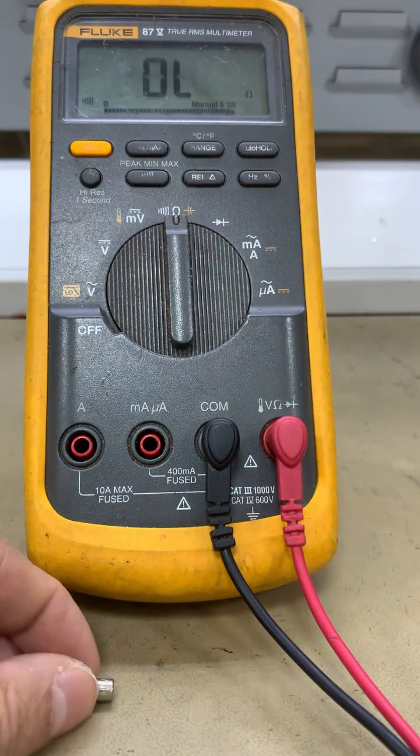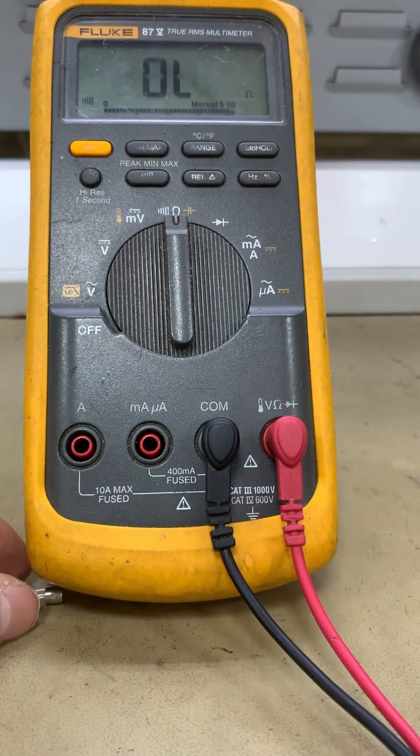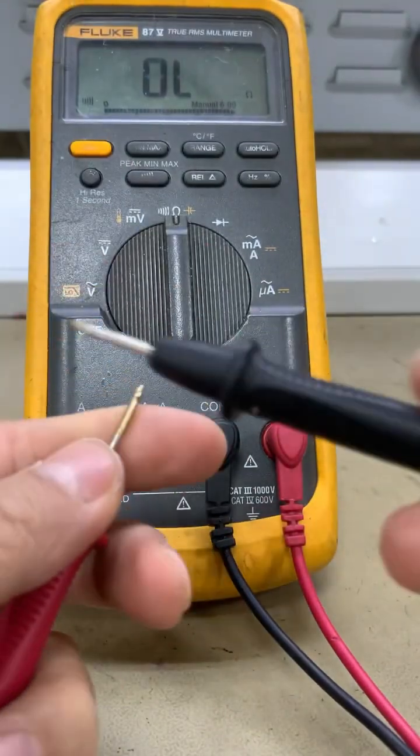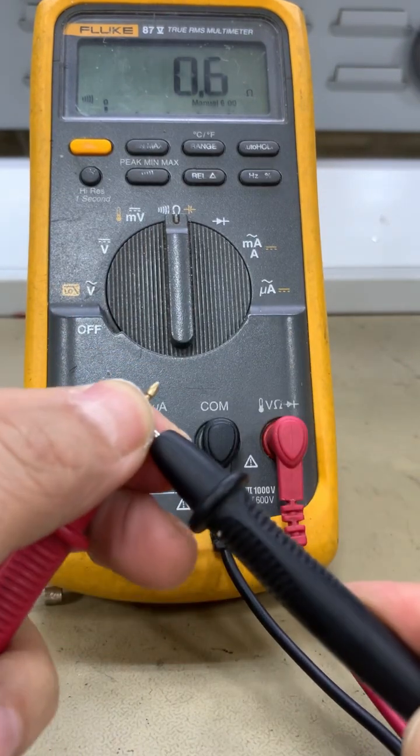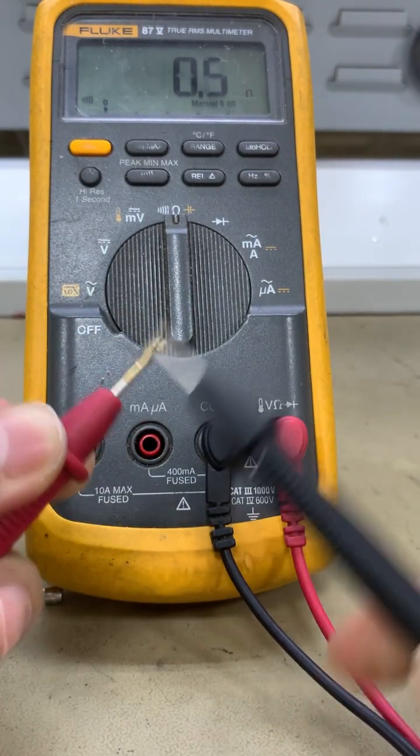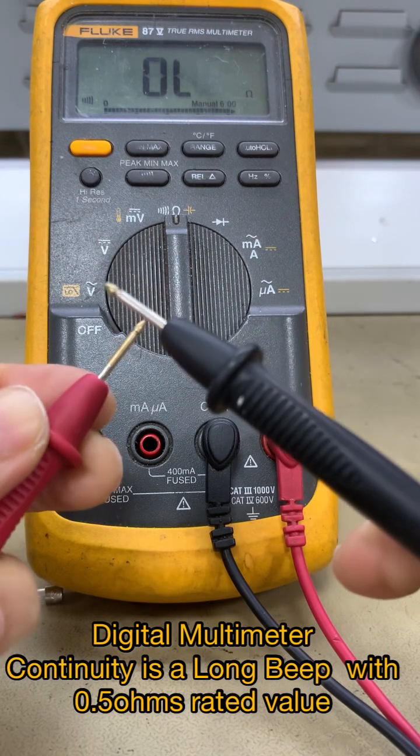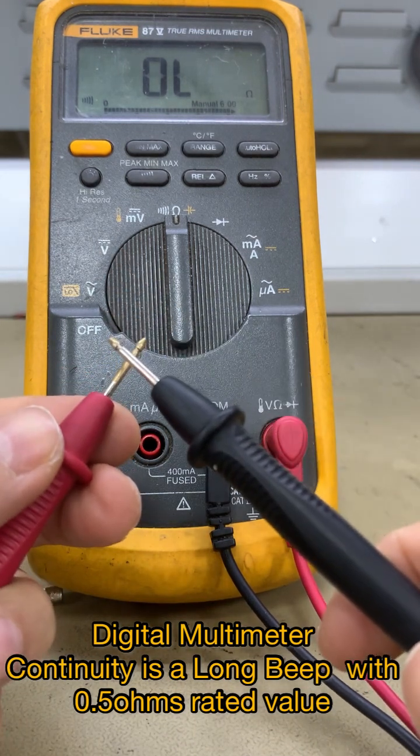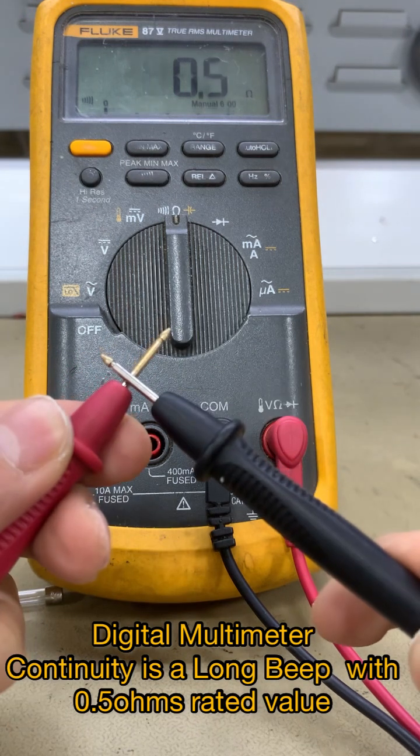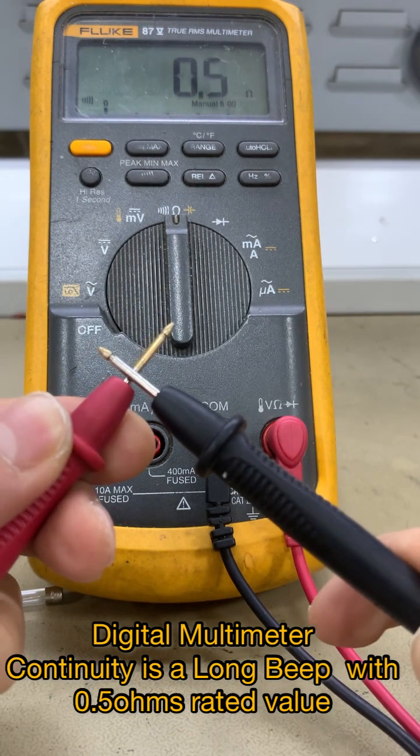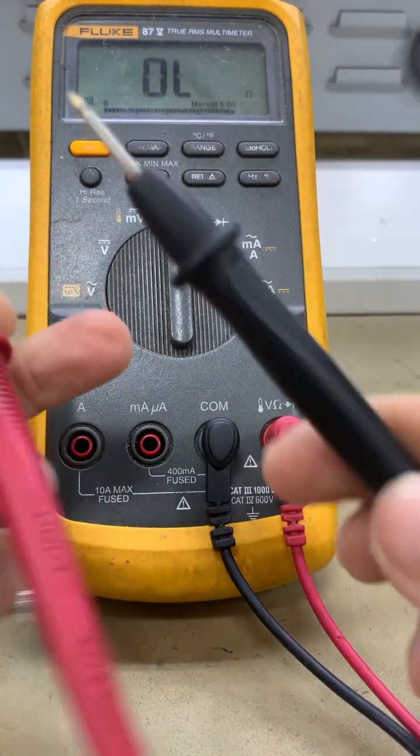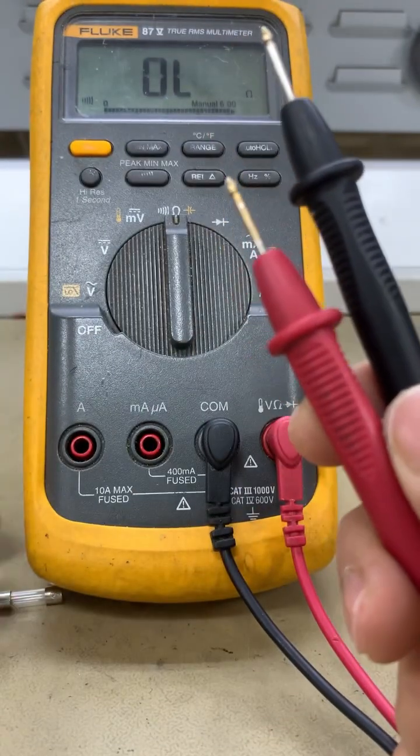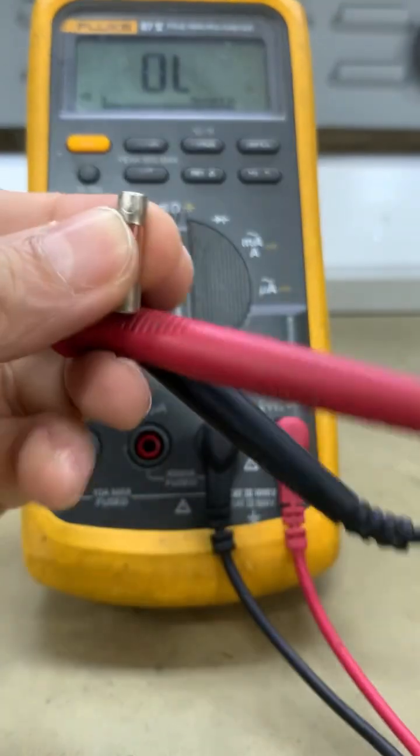Okay, the continuity is a continuous beep. There is a beep. So we touch the red and black probe, this probe. There is a beep, so this is the continuity. There's a long beep. Okay, then let's start, so let's test this glass fuse.